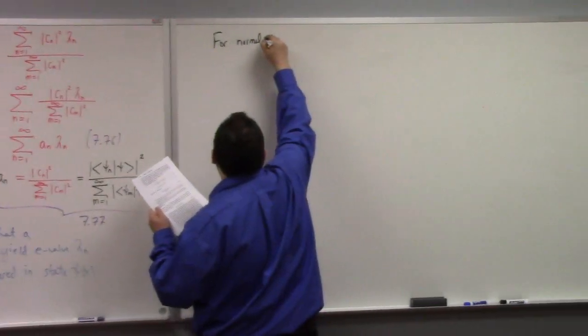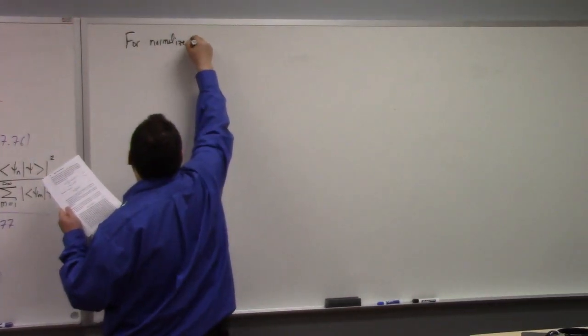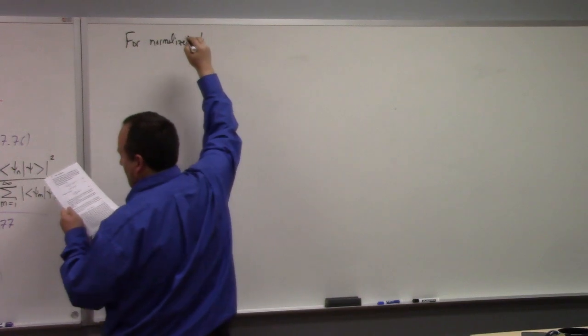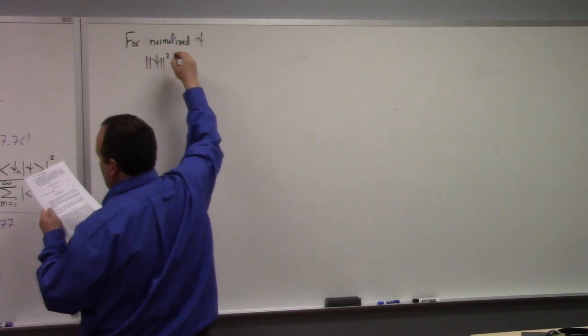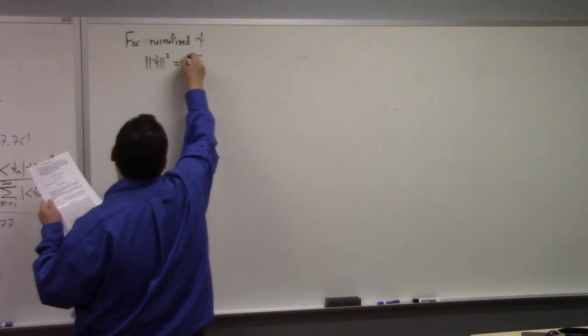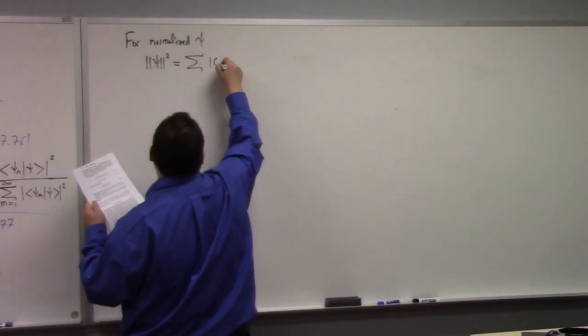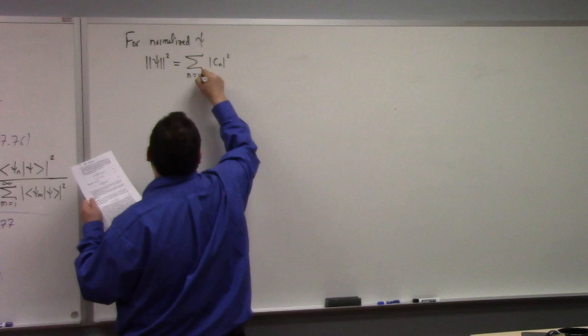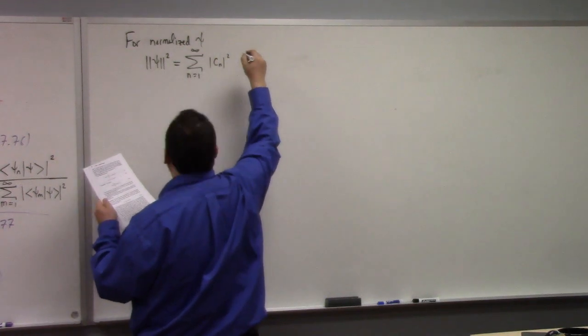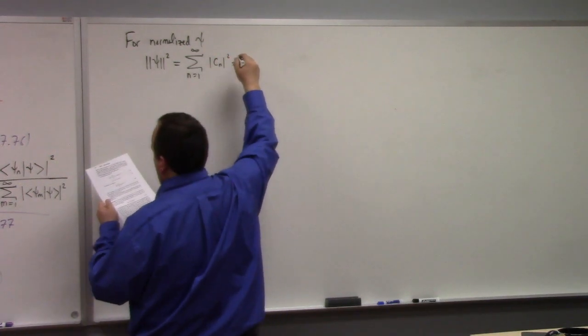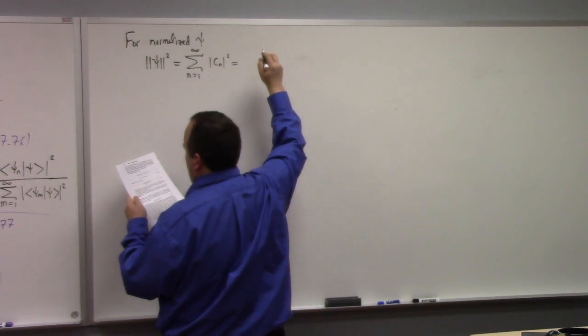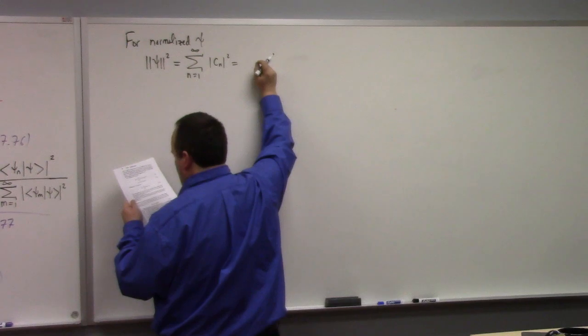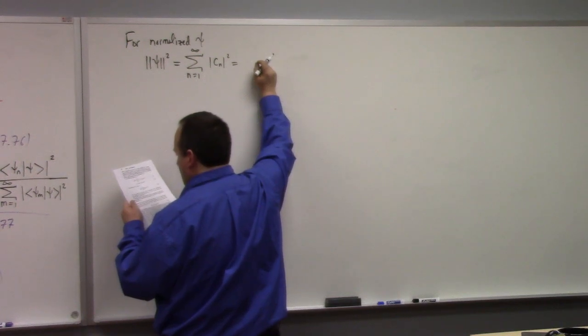For reasons you don't understand, for normalized psi, we have length of psi squared equals to the sum, of course, of the modulus of C_n squared equals to... what on God's green earth are you talking about?